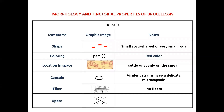Brucella are small, coccoid-shaped or very small rods, gram-negative, clustered on the sides. Virulent strains have a delicate microcapsule, with no fibers or spores.